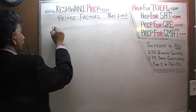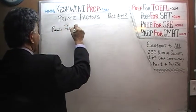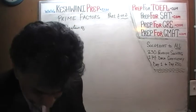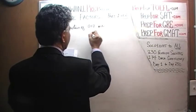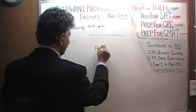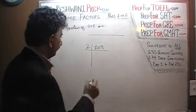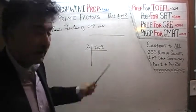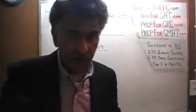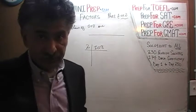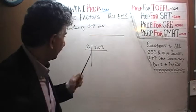The next question: what are the prime factors of 108? 108 is an even number, so we divide it by 2. Note that 108 is also divisible by 3 because the sum of its digits — 1 plus 0 plus 8 — is 9, and 9 is divisible by 3. But we must divide by the lowest possible prime number first, which is 2.